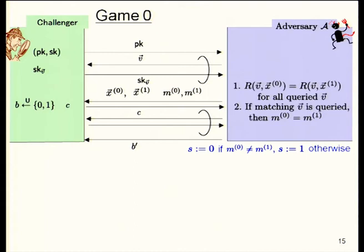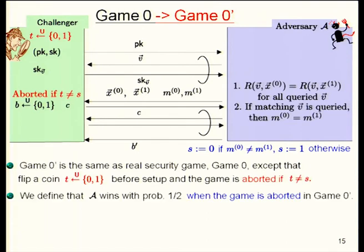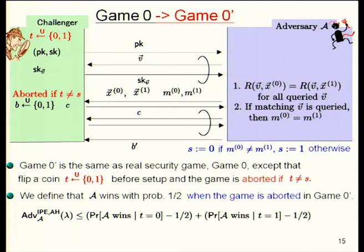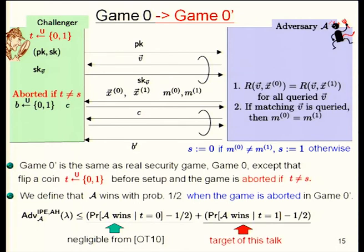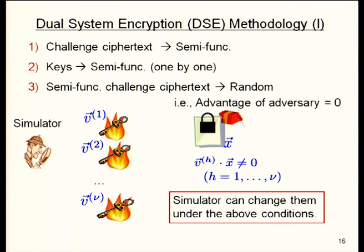Turning to the security proof: first, the original security game is changed to Game 0-prime. In this game, the challenger first flips a coin T, and at the challenge phase, if T is not equal to S, the challenger aborts the game. If the game is aborted, the success probability of the adversary is defined to be one-half. From this definition, a useful inequality is obtained: the left term is negligible from our previous work, and the right term is our target quantity to bound.